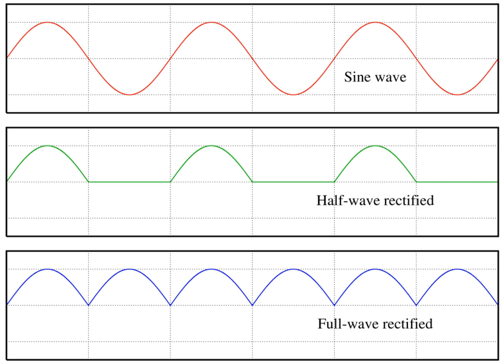The amplitude of a wave may be constant, in which case the wave is a continuous wave, or may be modulated so as to vary with time and/or position. The outline of the variation in amplitude is called the envelope of the wave. Mathematically, the modulated wave can be written in the form u(x,t) = A(x,t)sin(kx - ωt + φ), where A(x,t) is the amplitude envelope of the wave.